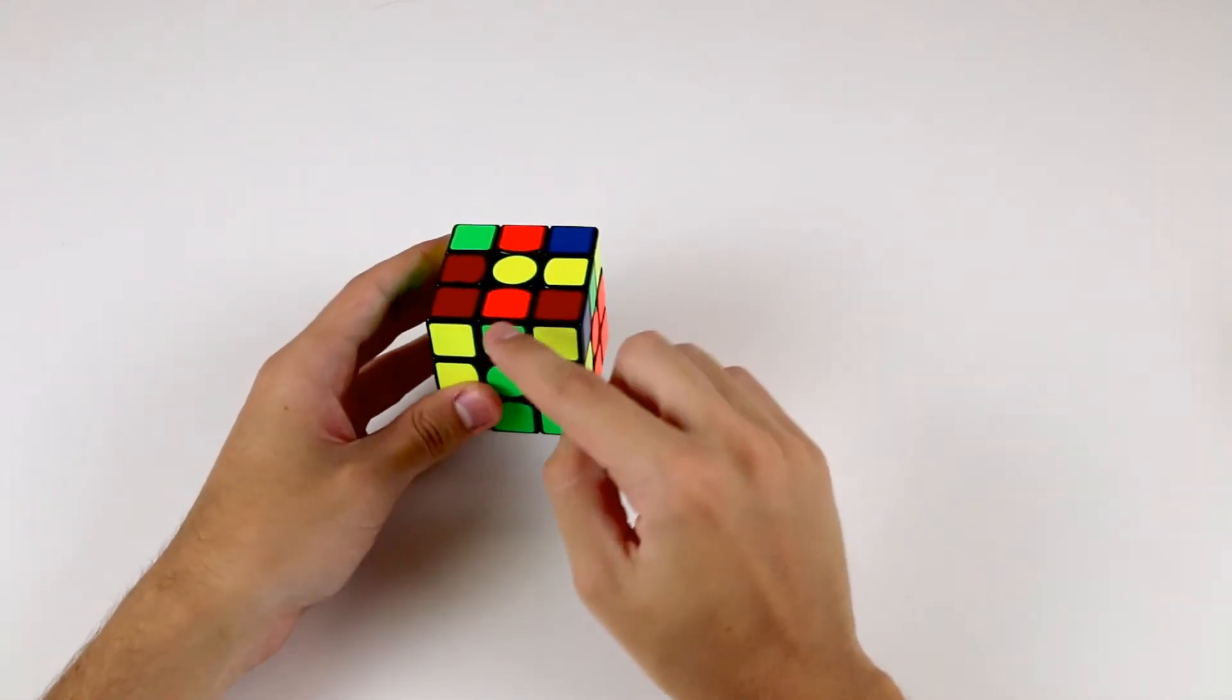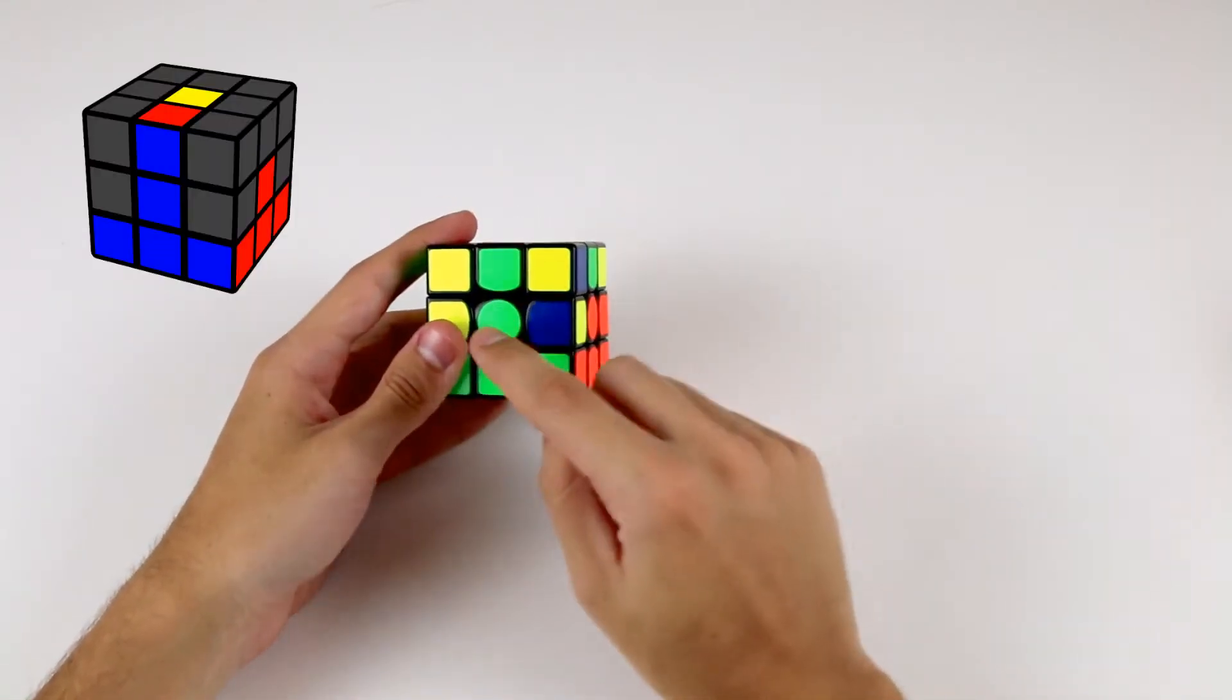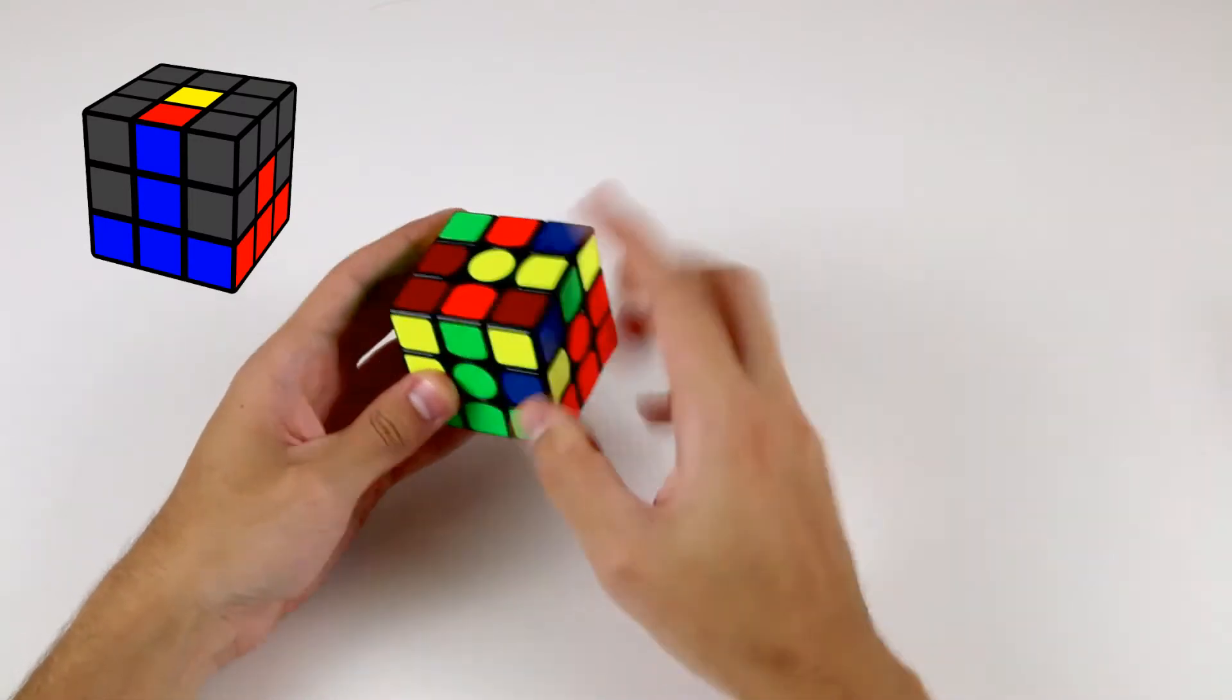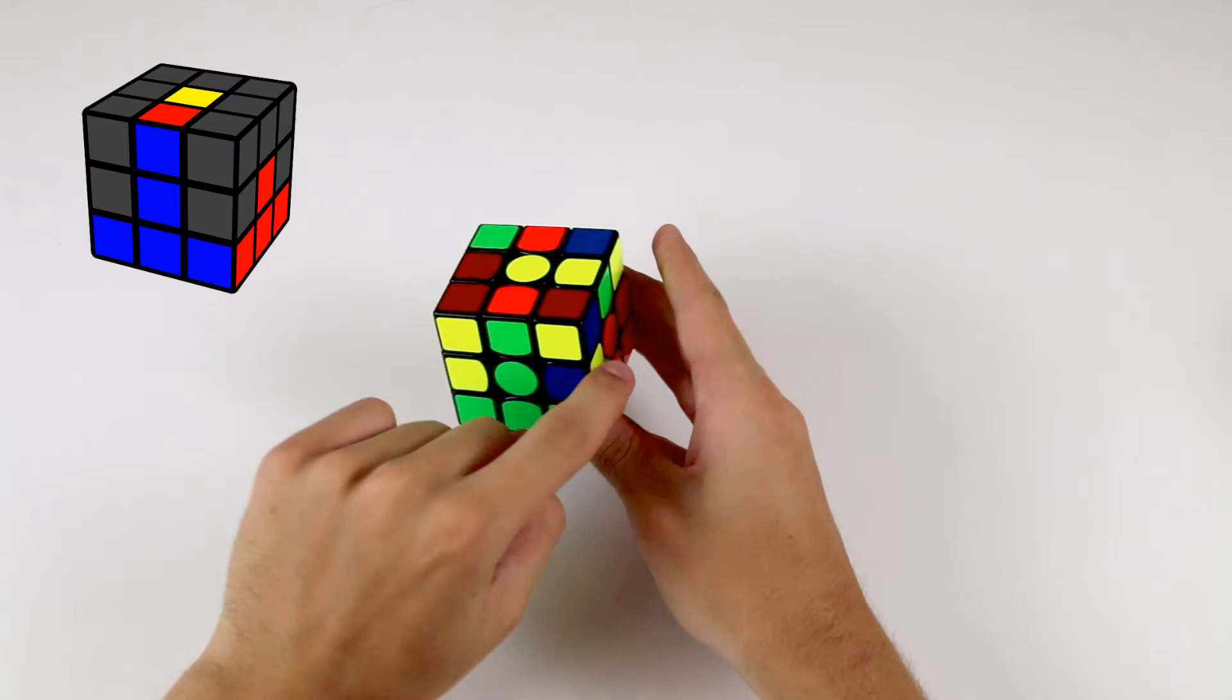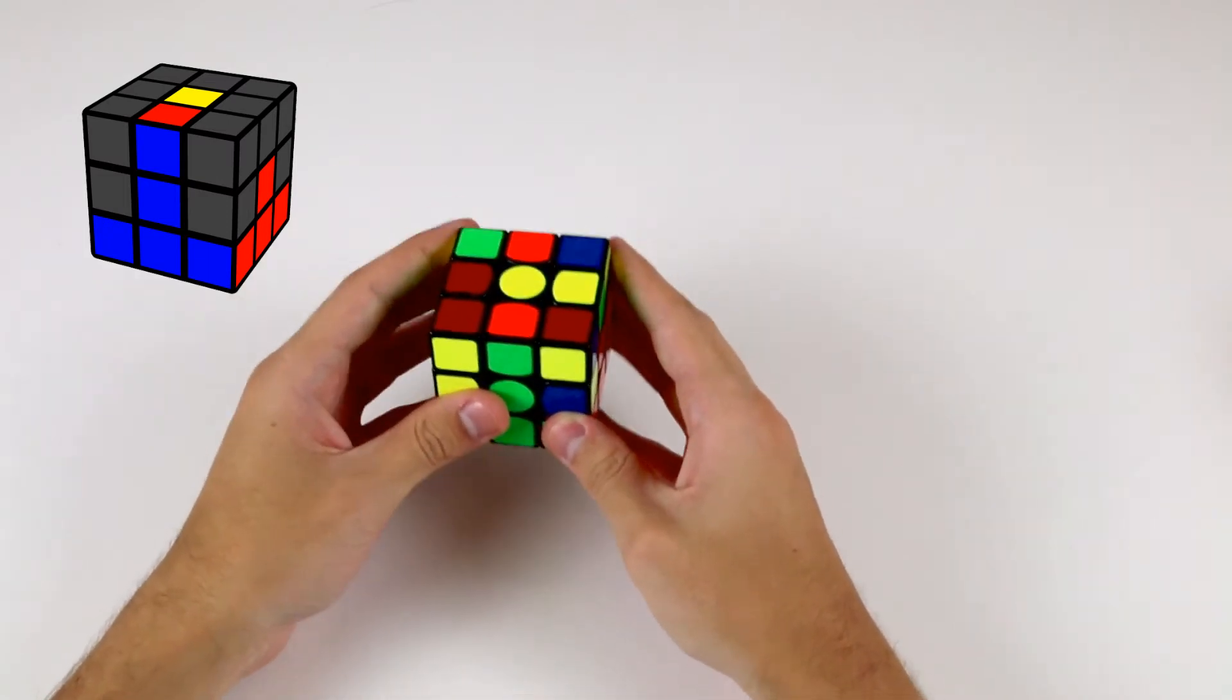Here we have the situation where the edge needs to go to the right, in between the green and orange centers, down here. So to move an edge to the right instead of the left, all we need to do is the following algorithm.